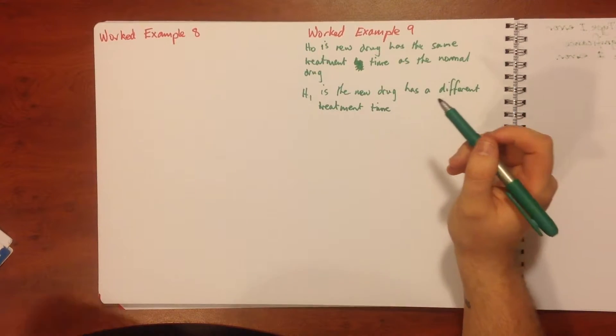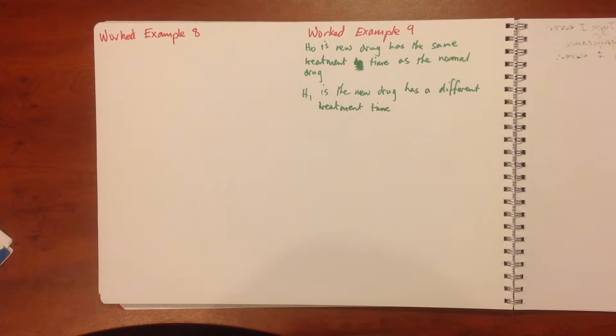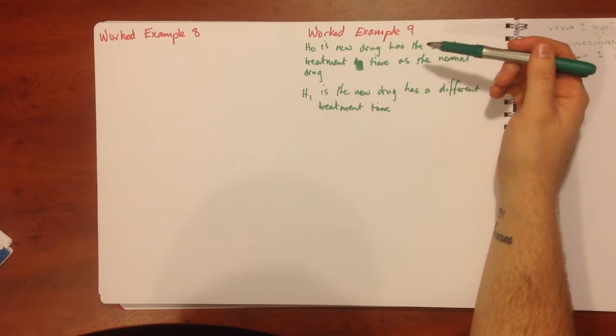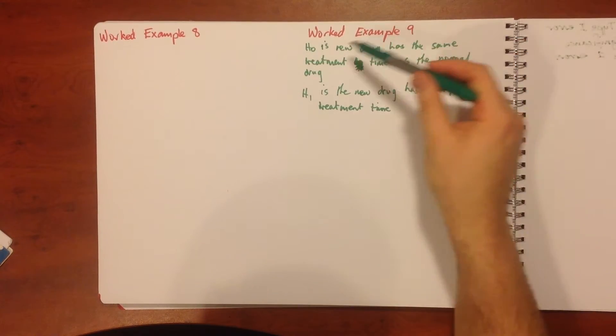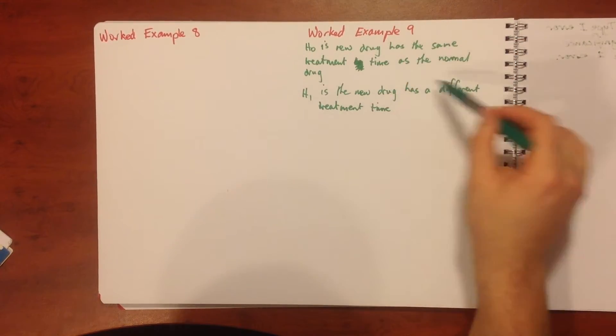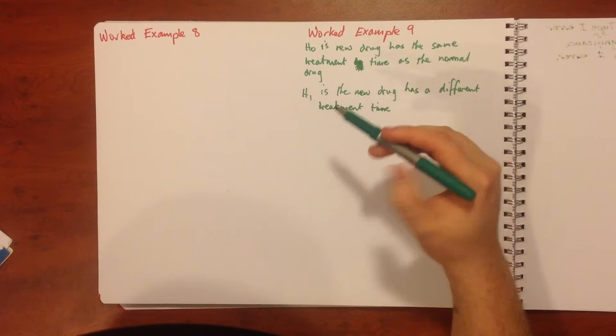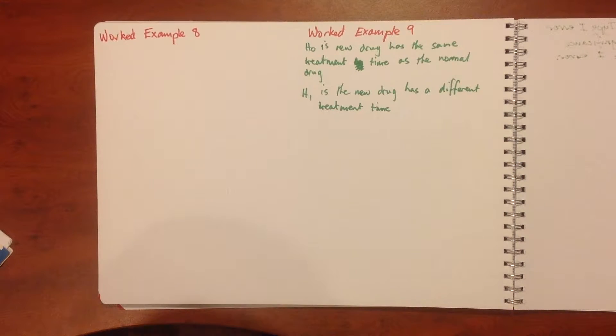For part A, if a type one error was made what conclusion was reached? A type one error means that the null hypothesis was rejected when it was actually true. So we'd be saying that we're rejecting this and accepting this when we shouldn't have. The new drug works differently to the normal drug.